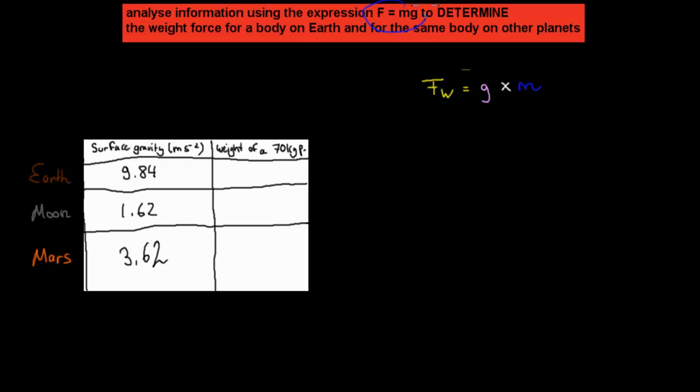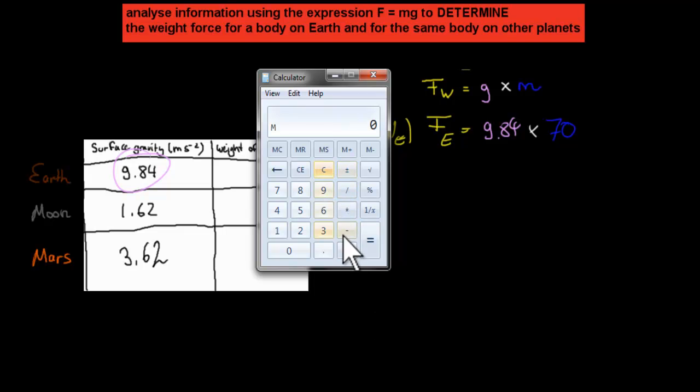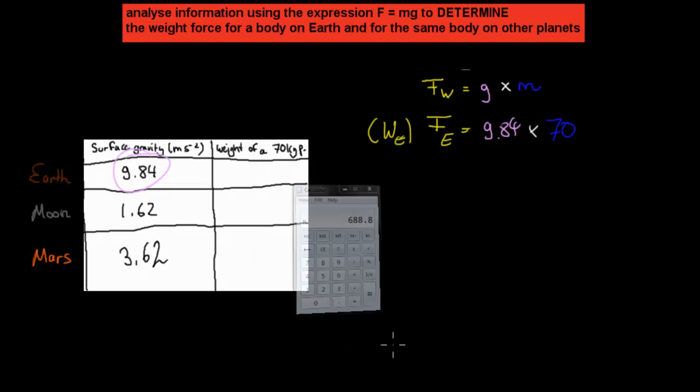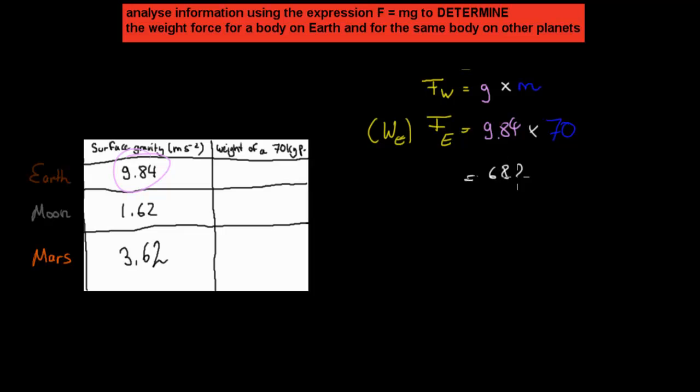We need to use this equation because there's a dot point. Force equals mass times acceleration. In the case of weight, weight equals gravity times mass. So say we want to have the weight on Earth. That means weight on Earth equals 9.84, we can get that from the table, times our mass of 70 kilograms. Put that in the calculator: 9.84 times 70 equals 688.8 Newtons.